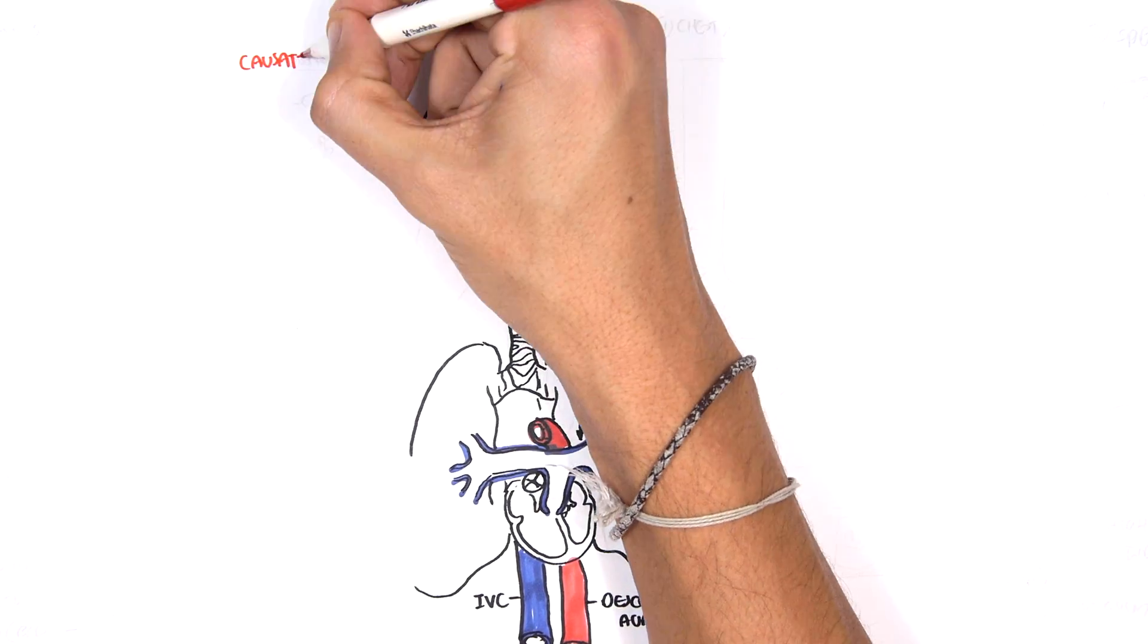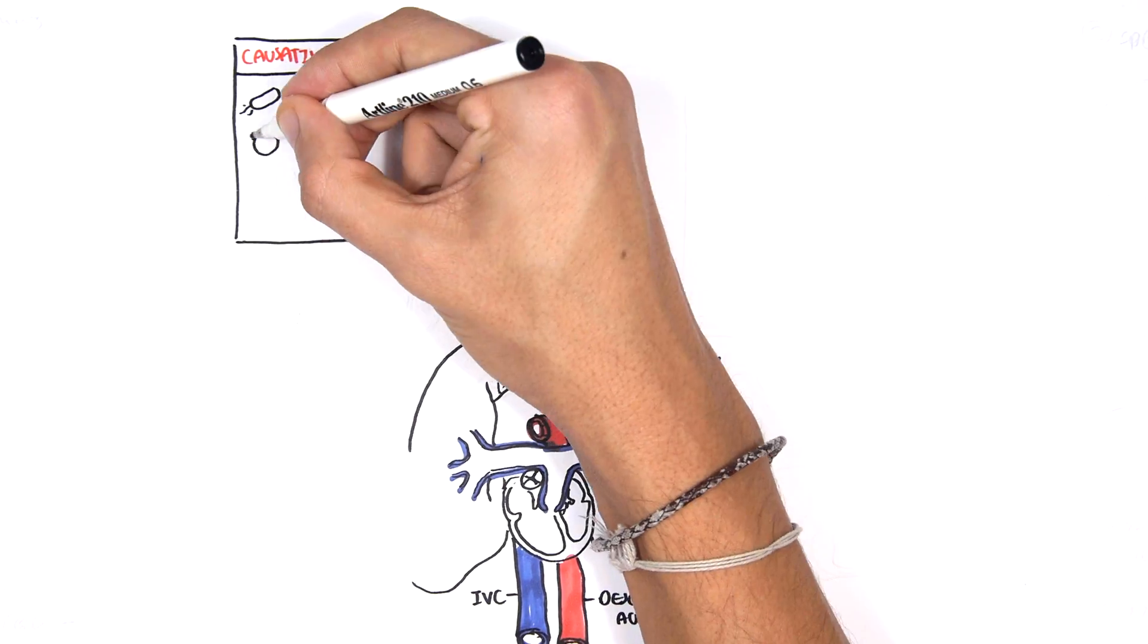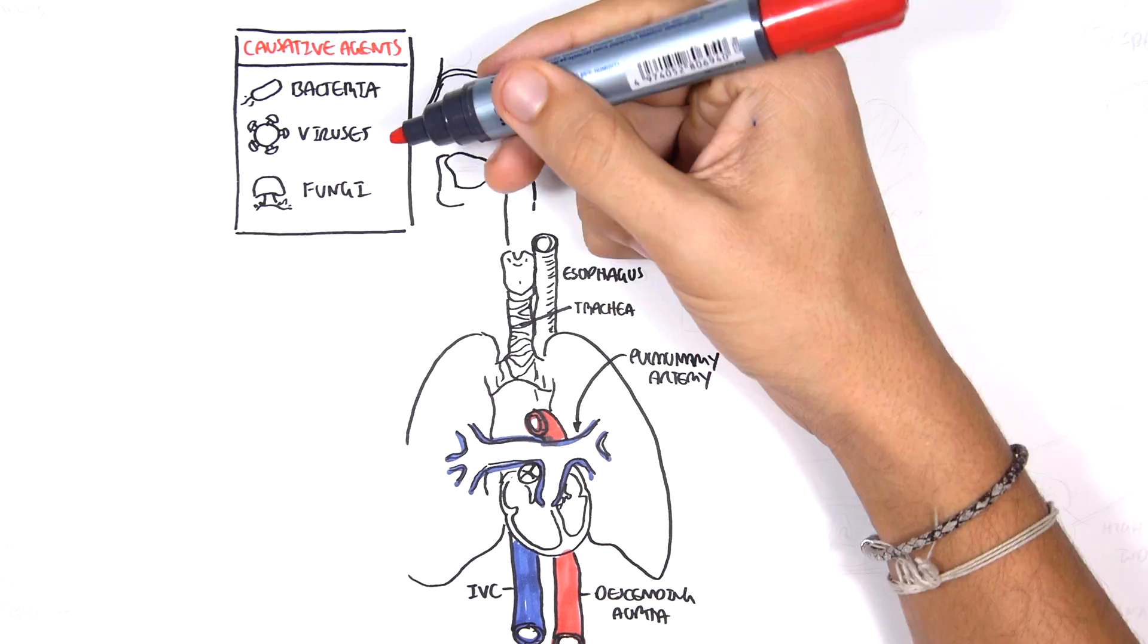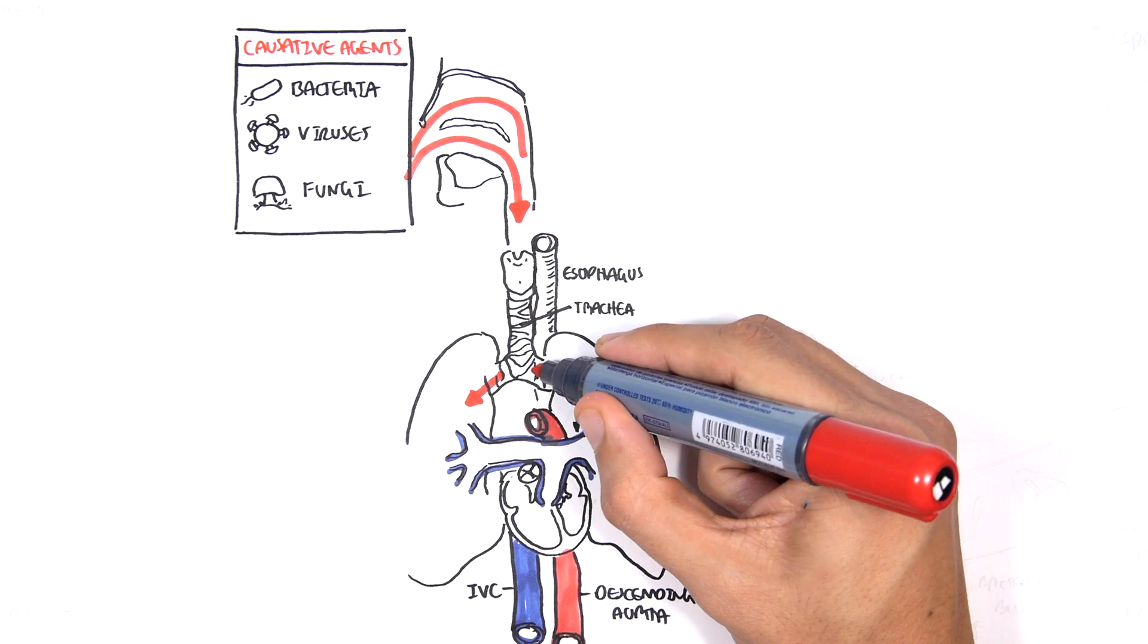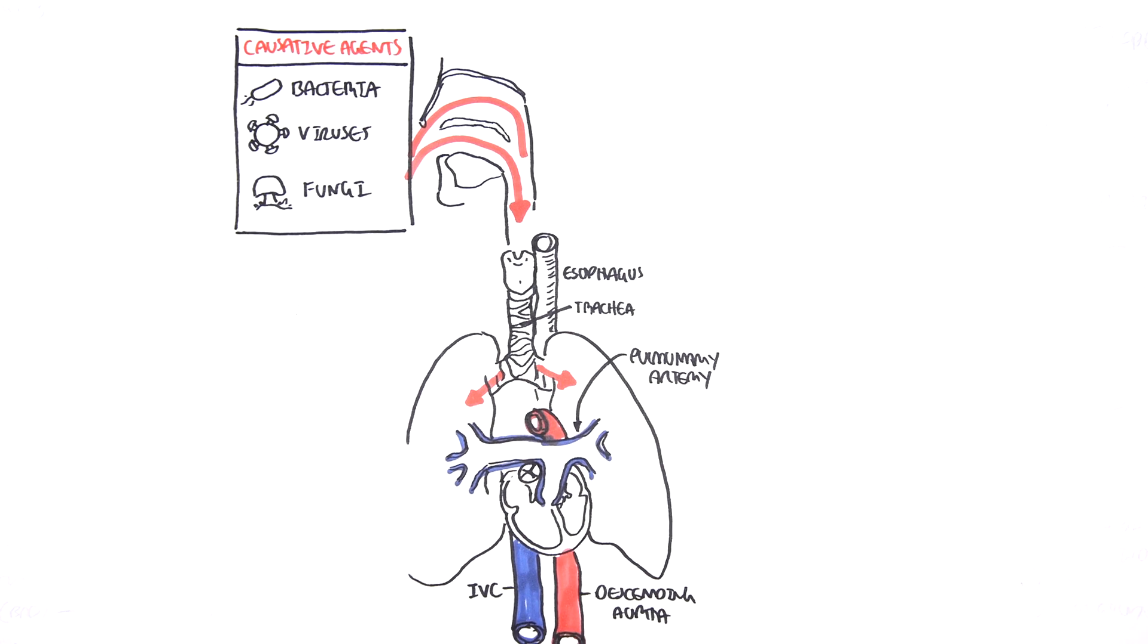Again, the causative agents are mainly the bacteria, virus and fungi. And these causative agents can cause pneumonia just by being inhaled into the lungs through the nose or mouth. And they can cause an infection if we have a bad pulmonary defence as we have learnt.